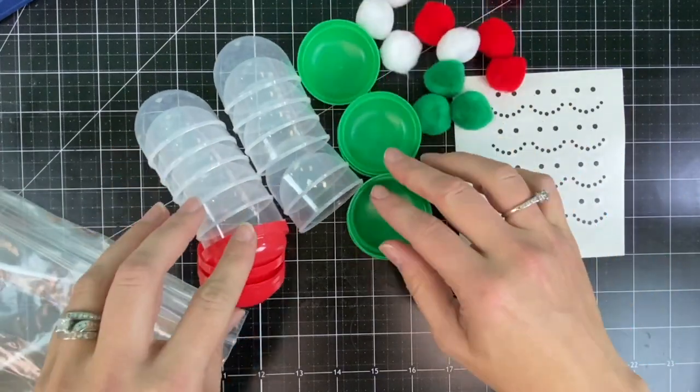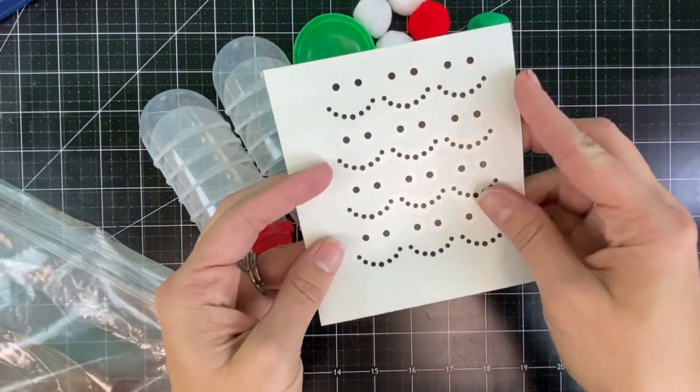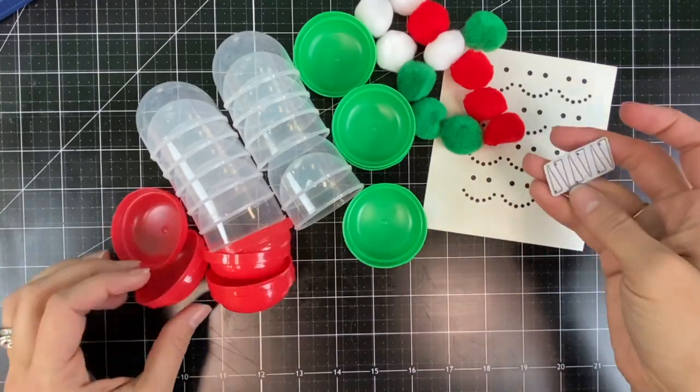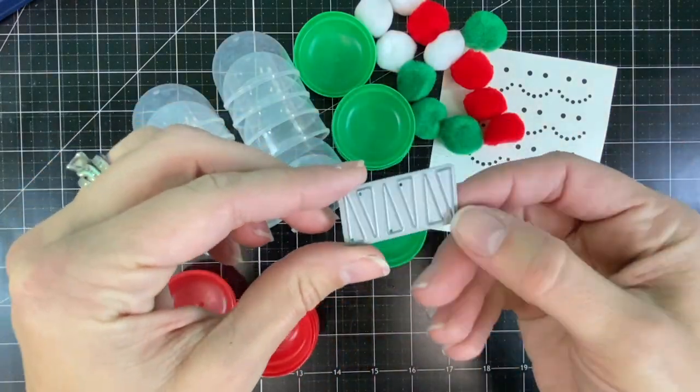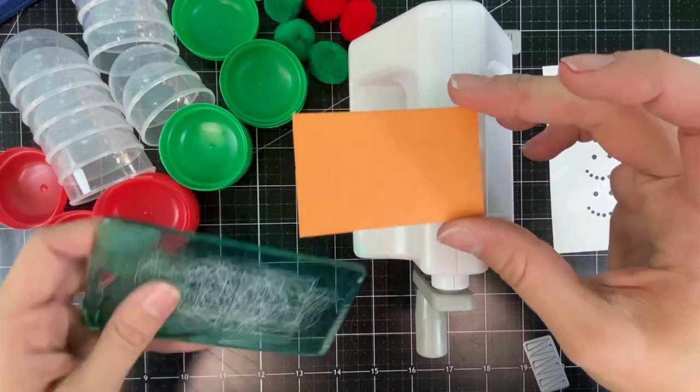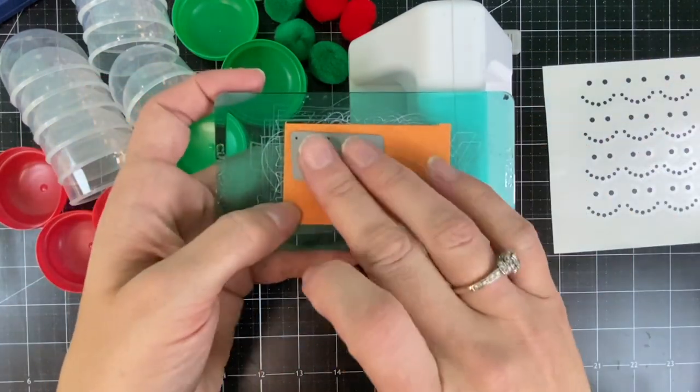You can see here you have six lids that are green and six red. You have 12 faces and 12 multicolored pom-poms. You'll also receive a die that you'll use to cut out the orange noses for each of the snowmen.